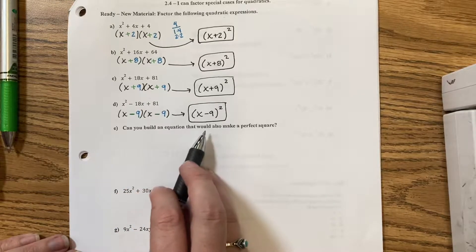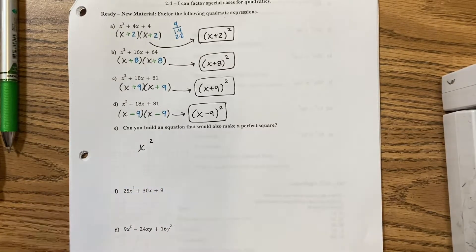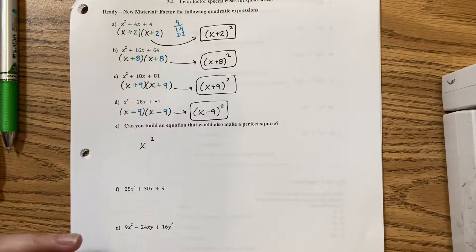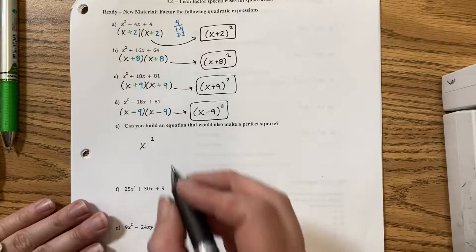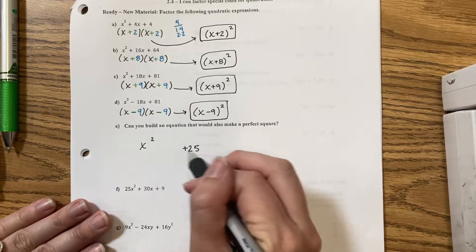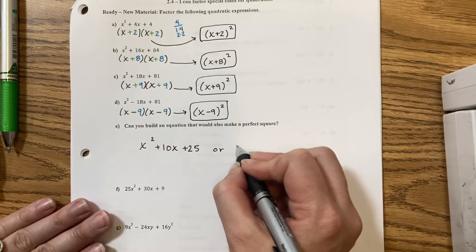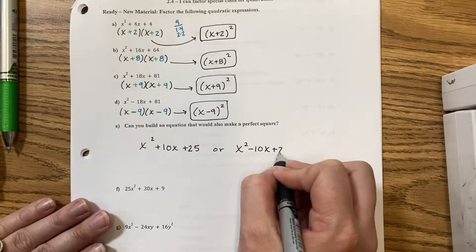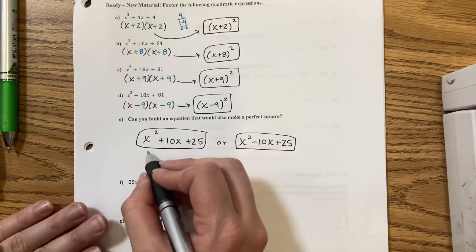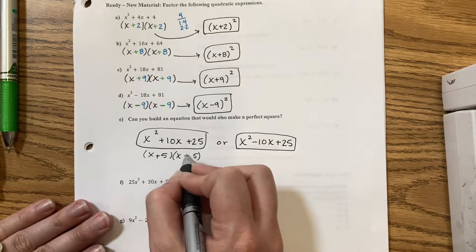Can you build an equation that would also make a perfect square on your own? I'm going to do x squared. What's a perfect square? I could do 2 times 2 is 4, 3 times 3 is 9, 4 times 4 is 16, 5 times 5 is 25. Anything that's a perfect square. So I'm going to try a positive 25. That means that in here, because I picked 25, I would have to have a plus 10x.